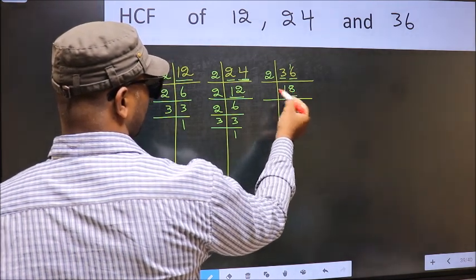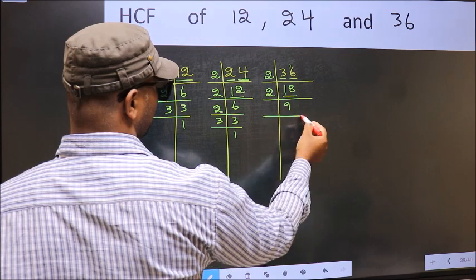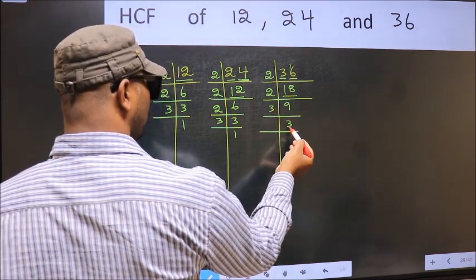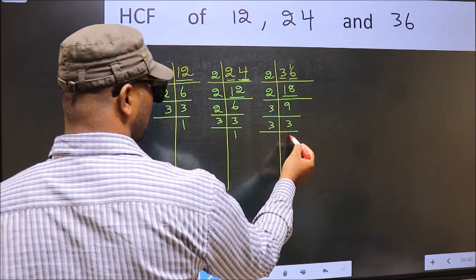Now 18. 18 is 2, 9 is 18. Now 9 is 3, 3 is 9. Now 3, 3 is a prime number. So 3, 1 is 3.